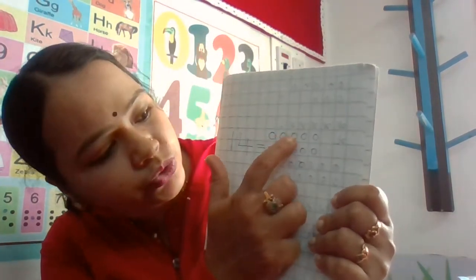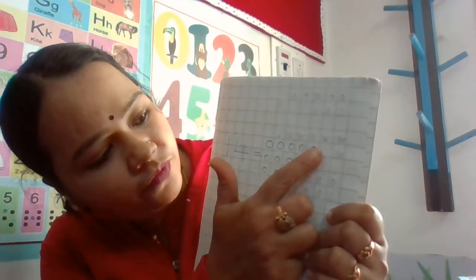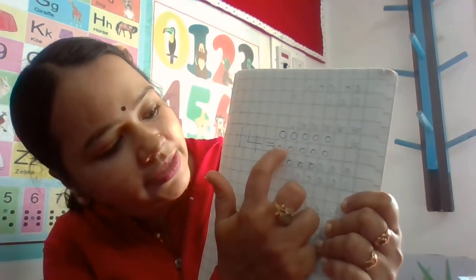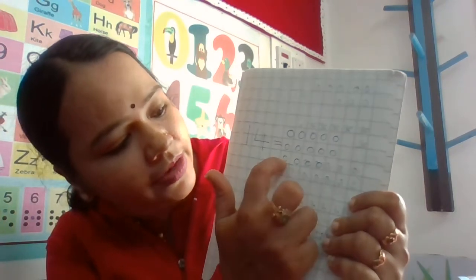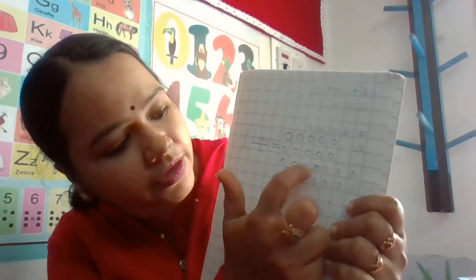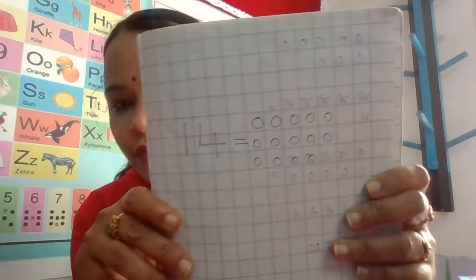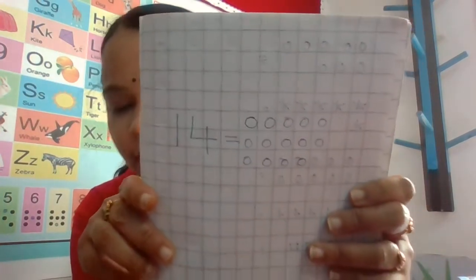1, 2, 3, 4, 5, 6, 7, 8, 9, 10, 11, 12, 13, 14. 14 circles altogether.